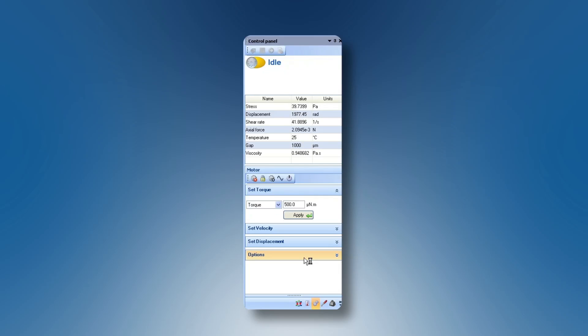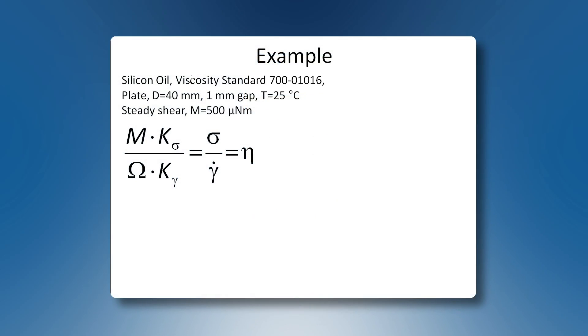So we have seen in TRIOS our set torque was 500 microNewton meters, and we measured a velocity of 2.09 radians per second.